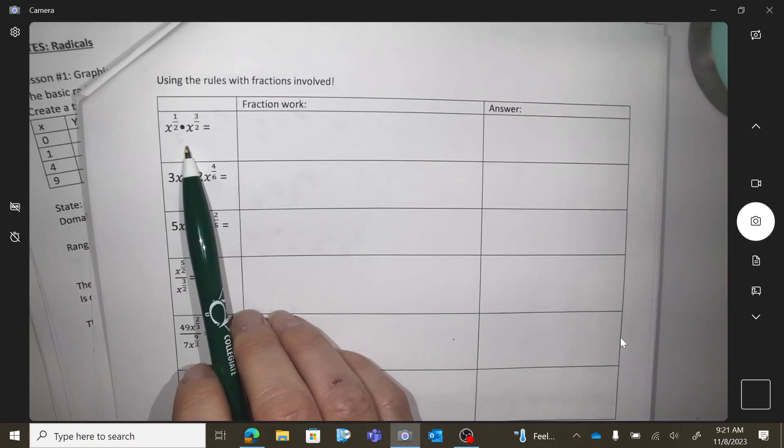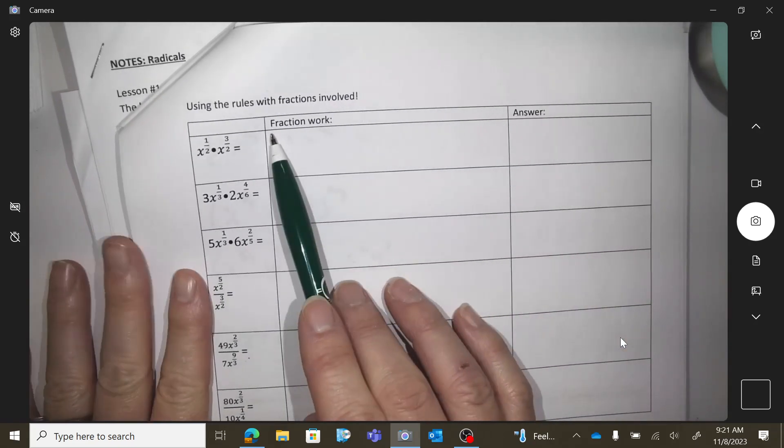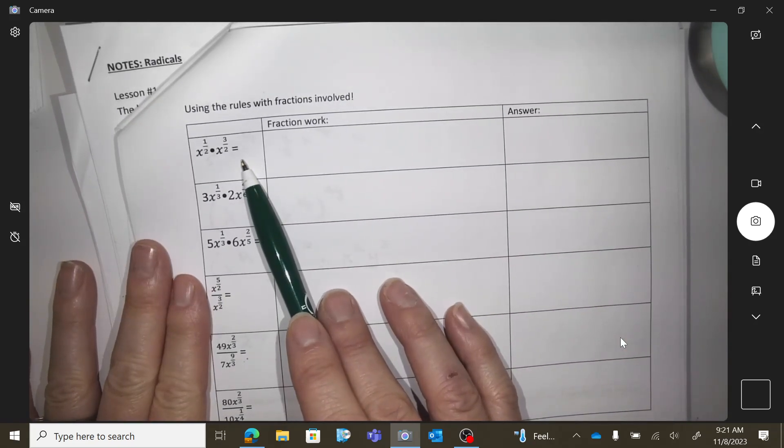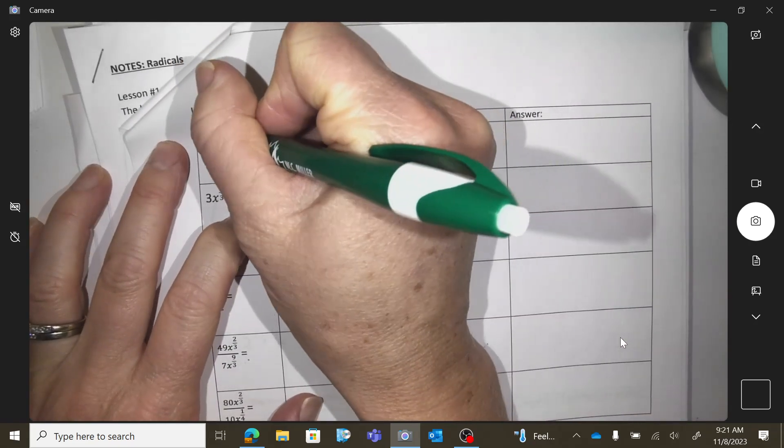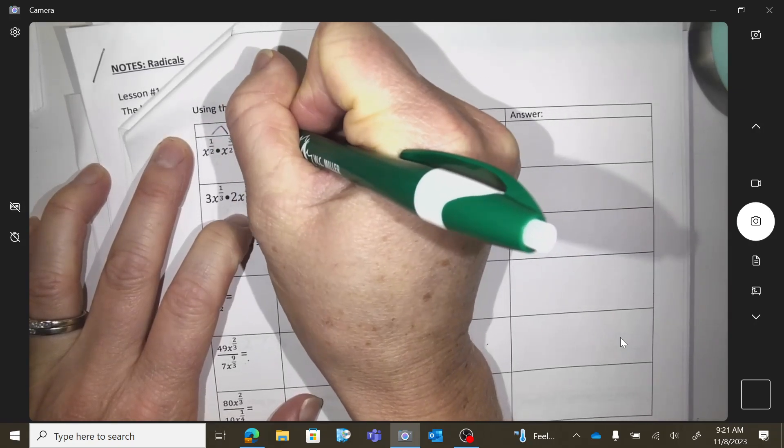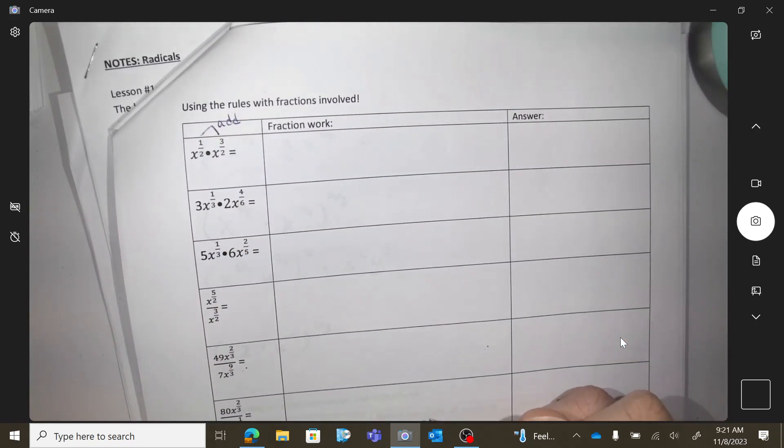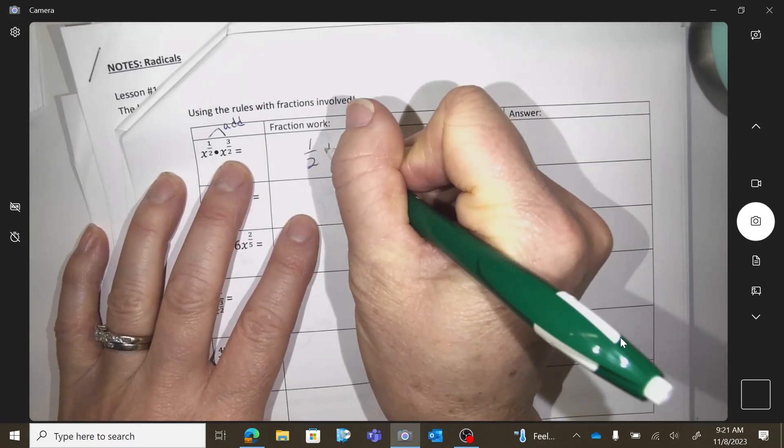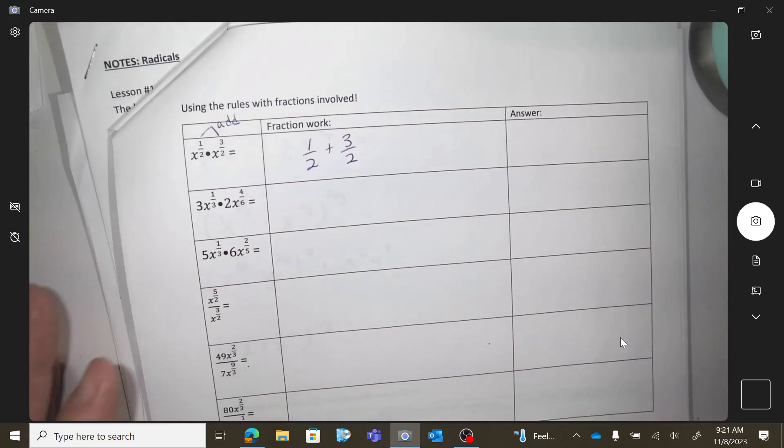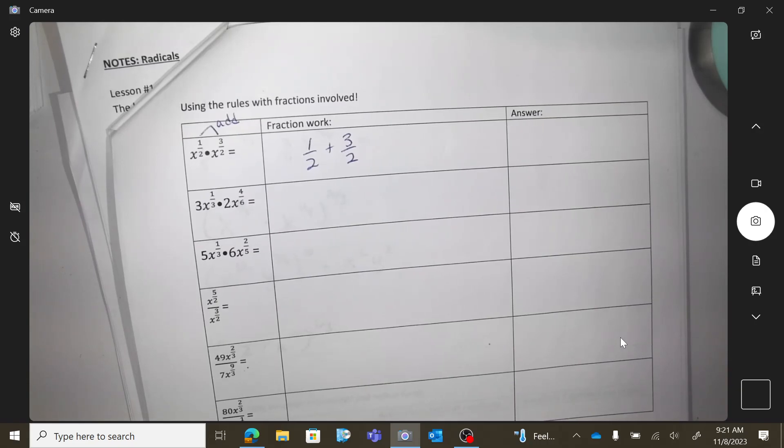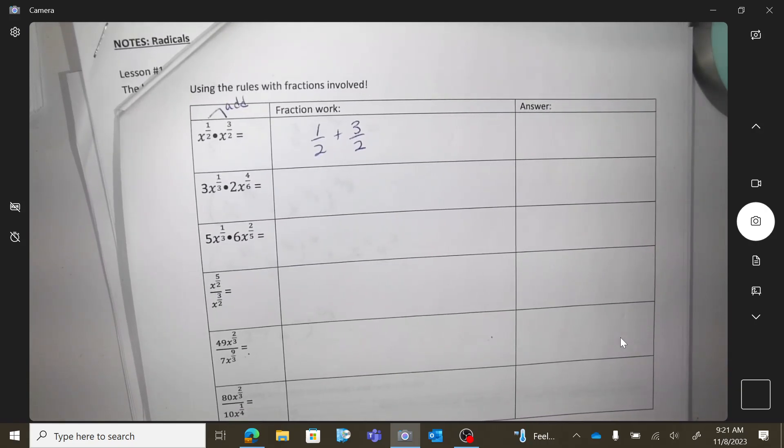Okay, so we know these rules now. When you multiply with bases that are the same, the rule would be to add the exponents, right? When you multiply, you add the exponents. So I'm going to have to add those numbers together. So what's the deal with adding fractions together? What do you need?